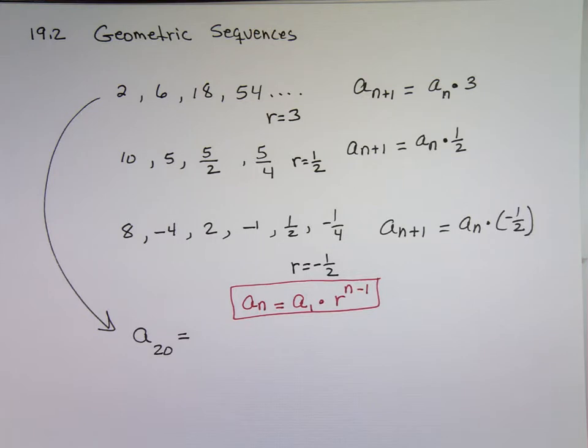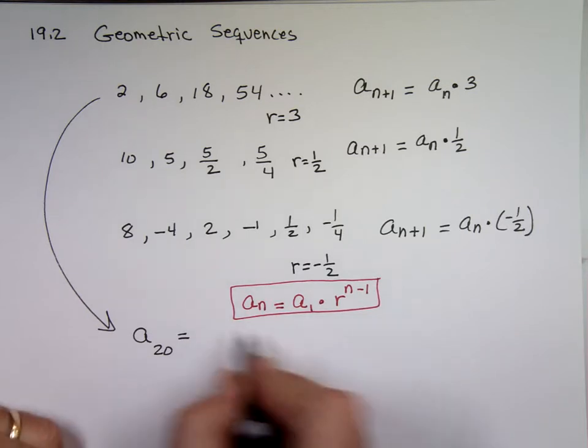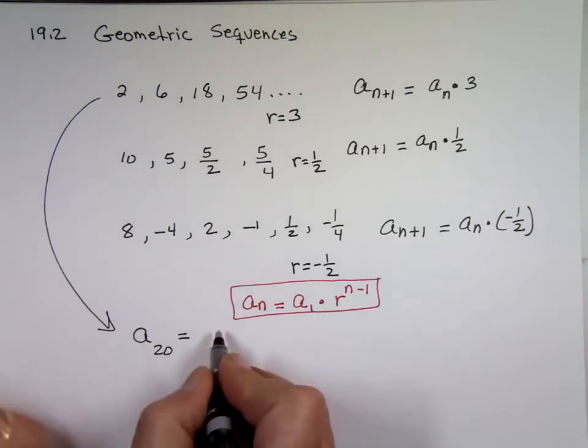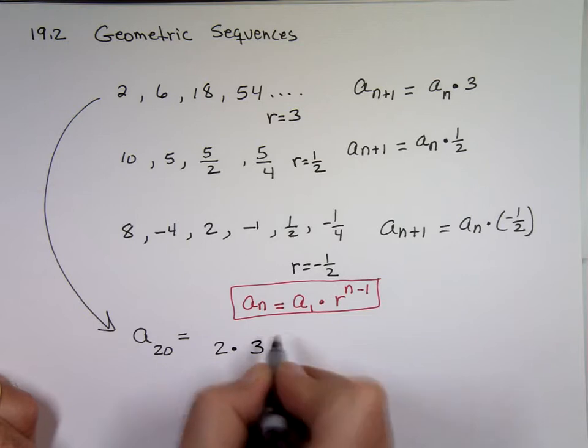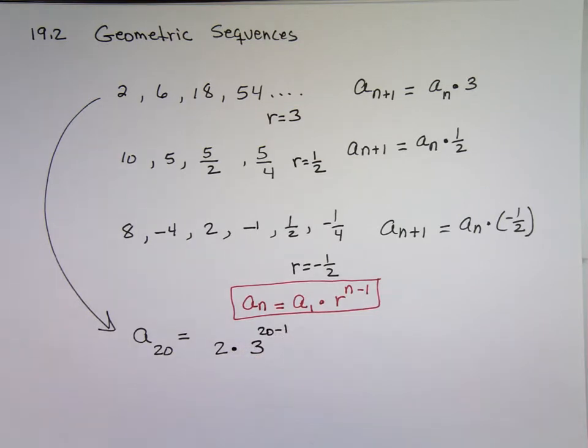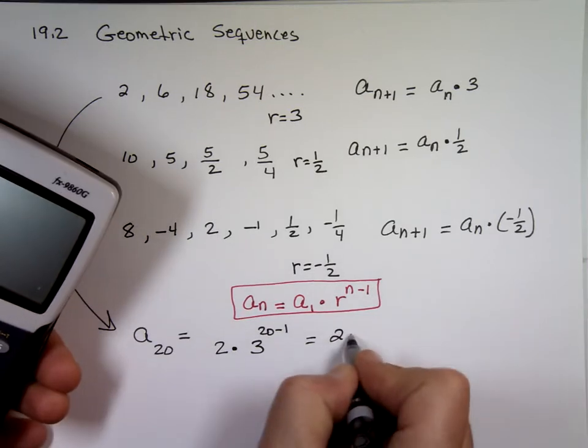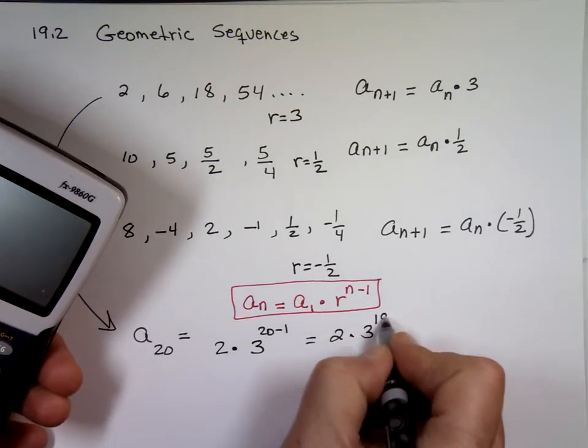True? You'll see that, yep. Now, 20th number here will be what? A1, which is two times. R in this case was what? Three to the power of what? 20 minus one. It's going to be a huge number. That's a 19. Two times three to the 19. Get ready for a huge number.